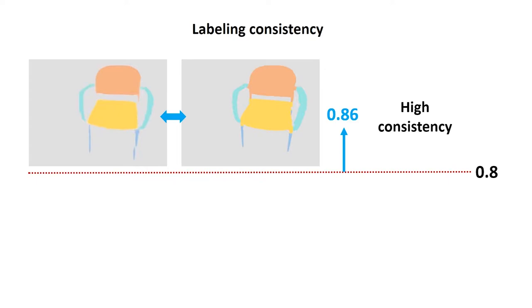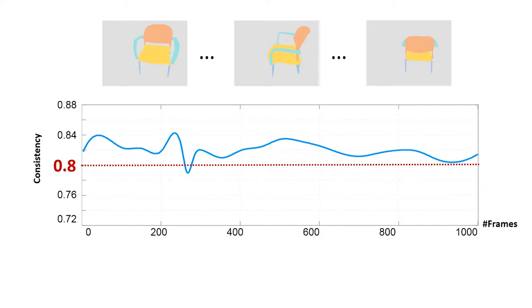We consider a labeling to be of high consistency if the percentage is larger than 80%. Here is another pair of labeling with low consistency. A sequence is considered to be of high confidence if it does not contain any subsequence longer than 30 frames, with all of the frames being of low consistency.